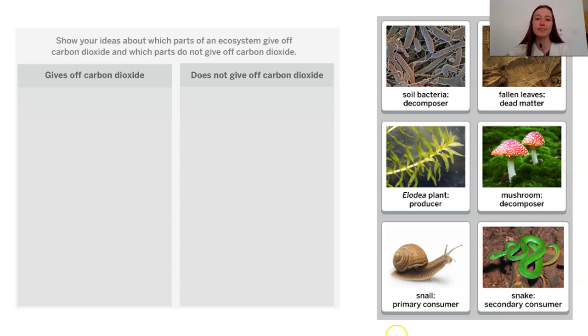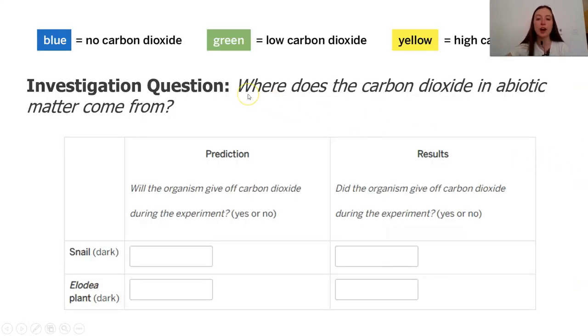Now that you have sorted the different organisms into your predictions about what gives off carbon dioxide and what does not give off carbon dioxide in an ecosystem, we are going to start investigating this question. To do this, we are going to watch an investigation of a scientist studying whether or not carbon dioxide is produced by a snail and an elodia plant.